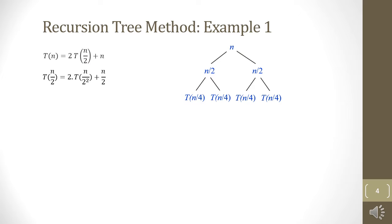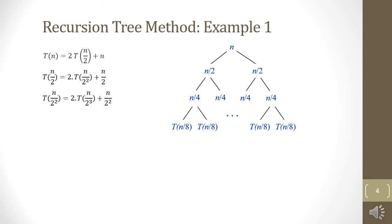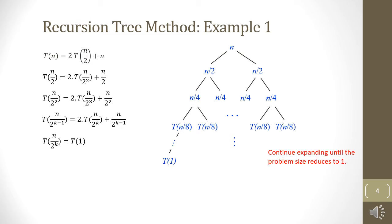Now we need to find the value of T(n/4). We plug n/4 into the original recurrence equation and get T(n/4) = 2T(n/8) + n/4. After finding T(n/4), we replace T(n/4) in the recursion tree and continue expanding until the problem size reduces to 1, which happens at the k-th level.